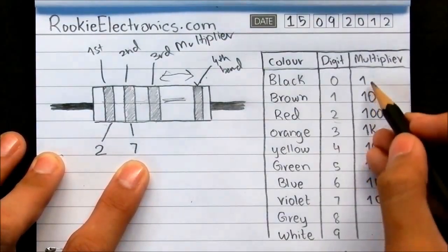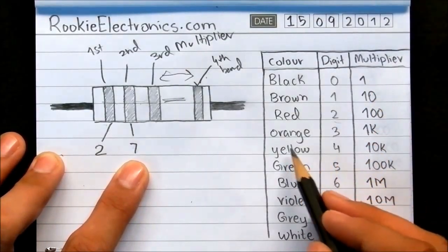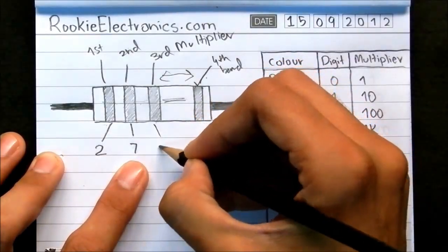So you will take the multiplier value of orange. The multiplier value of orange is 1000. So write 1000.